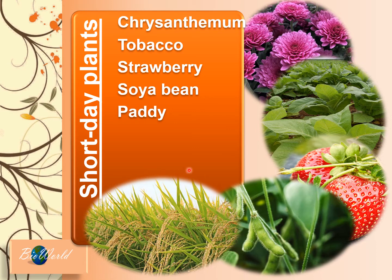Here are more examples of short day plants: besides the strawberry, you also have chrysanthemum, tobacco, soybean, and paddy. I provide these examples because in exam questions they may not directly tell you to explain photoperiodism in a short day plant — they may ask you to explain photoperiodism observed by paddy. If you cannot remember what type of plant paddy is, you would not be able to answer the question.